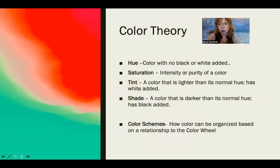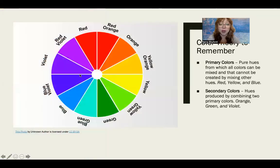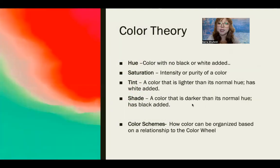Here's some terminology for color theory. Hues are just the colors themselves, and a pure hue means no black or white has been added. Saturation is how intense or pure a color is — everything on the color wheel is fully saturated with no tint or shade. Tint is when a color is made lighter than its normal hue by adding white, and a shade is when a color is darker because black has been added.